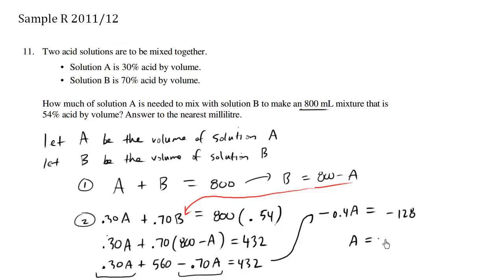We solve for A as 320 as our final answer. So we need 320 milliliters of solution A to mix with solution B to make this mixture that is 54% acidic.